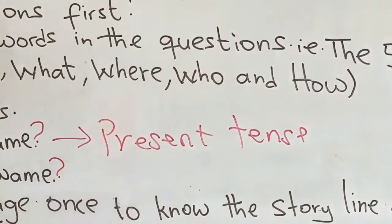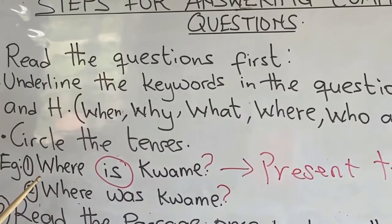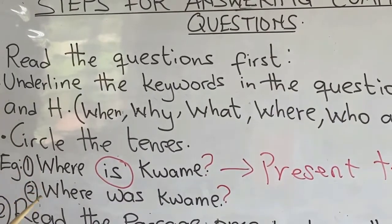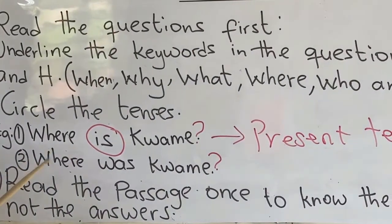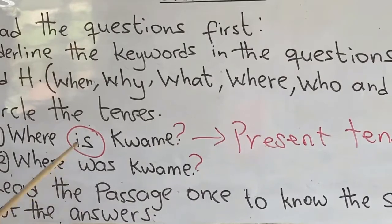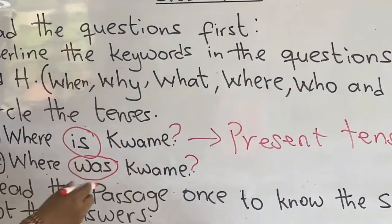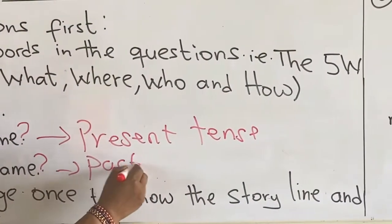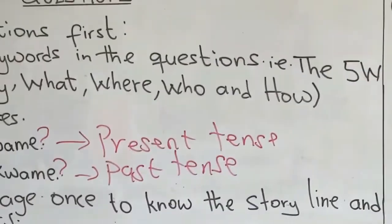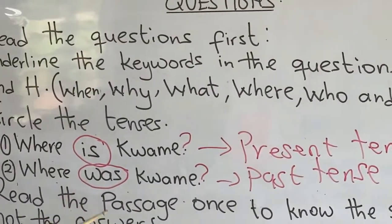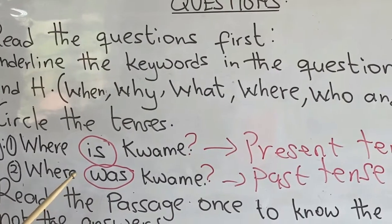Now let's look at example two: 'Where was Kwame?' The verb here is in the past tense. Meaning, when answering this question, the answer should be in the past tense.